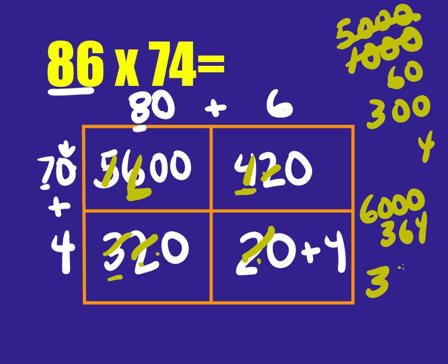6364. Now you just put them all together. 6364. And look at that. You've got the answer. You can do it any way you want.